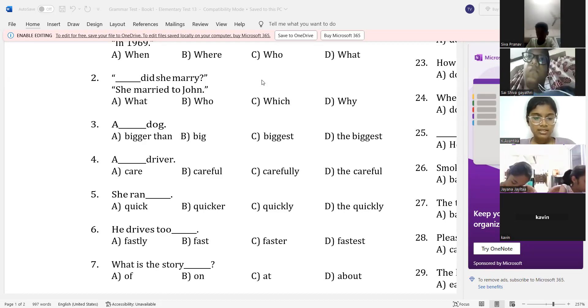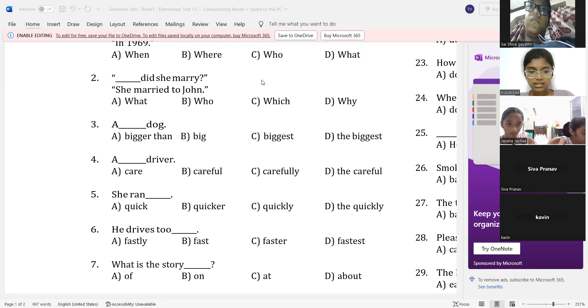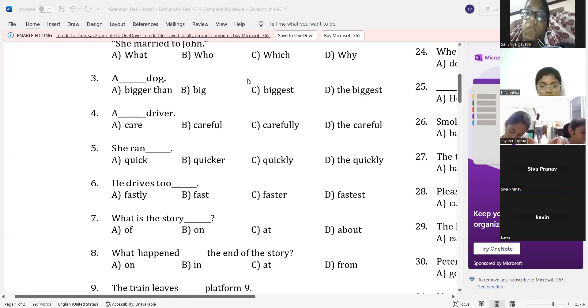He drives too dash. He drives too fast. Yeah, here it is, just fast. Very good. Six speed. Very, superb. Super. 7, 8, 9 data. 7, 8, 9.